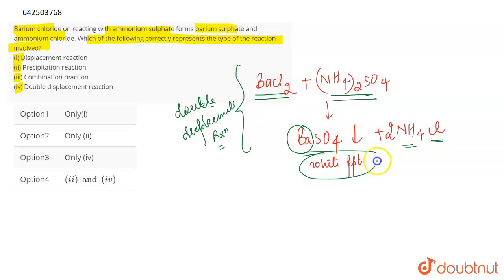Now also a precipitate is formed over here. So this can also be called as a precipitation reaction. So out of the four statements that is given below it is a double displacement reaction and a precipitation reaction.